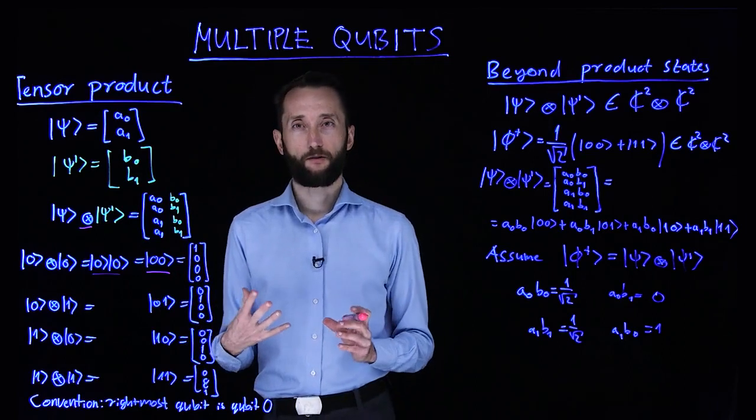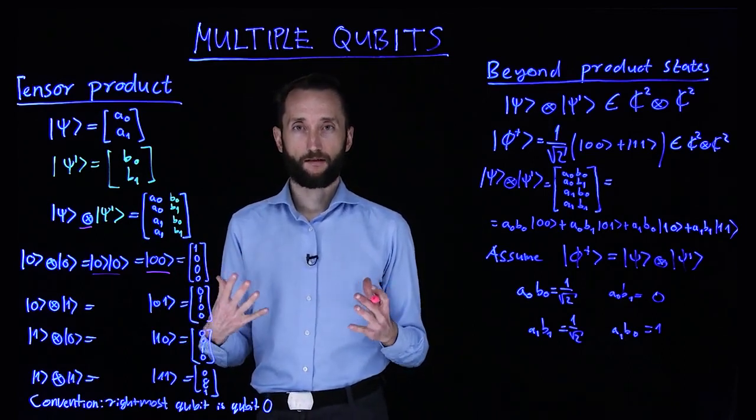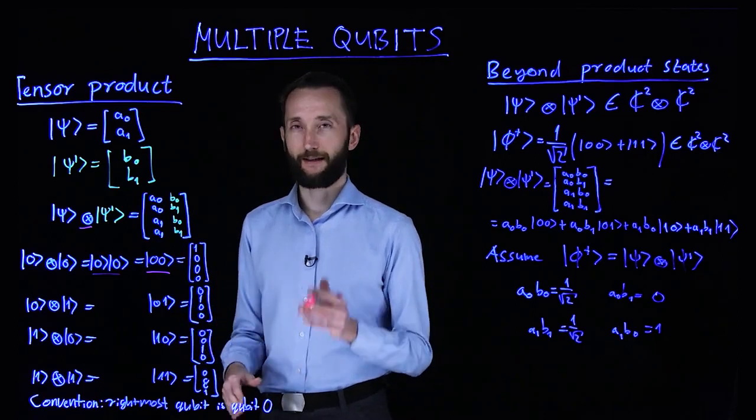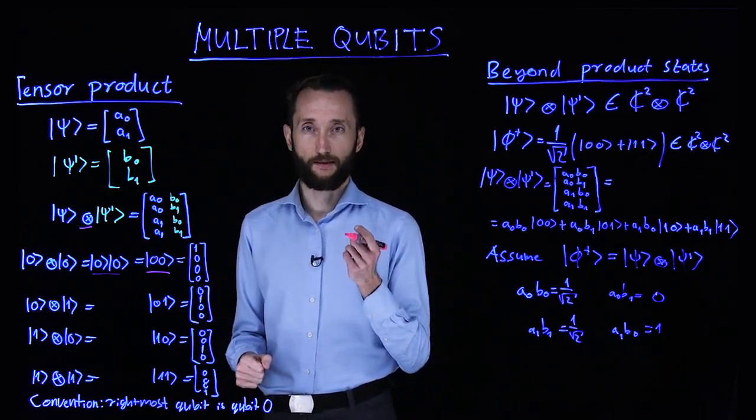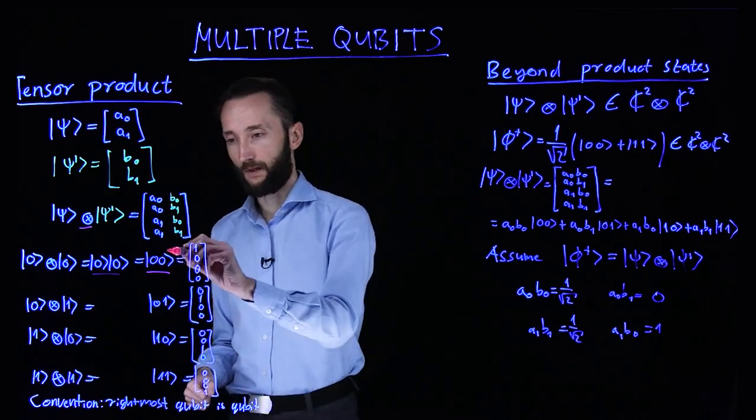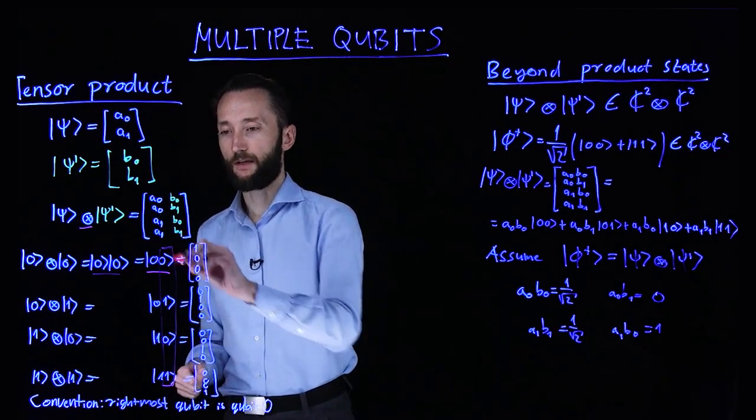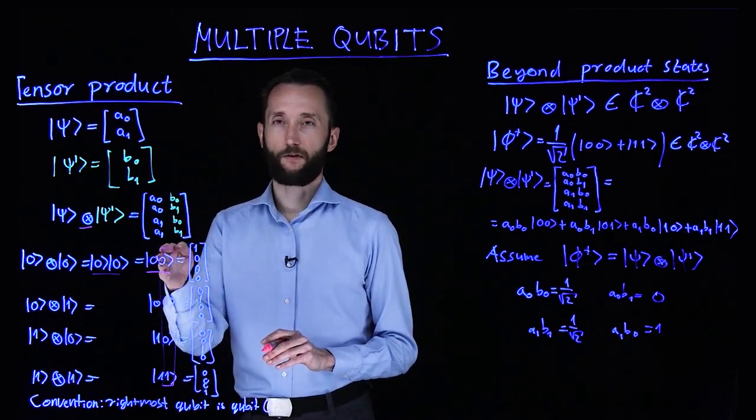And there's a very important convention that most quantum computing libraries out there use, which is that it's the rightmost qubit which is qubit 0. So this would be qubit 0, and then to the left of it would be qubit 1, and so on and so forth.